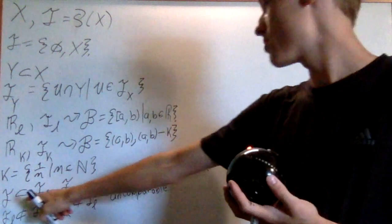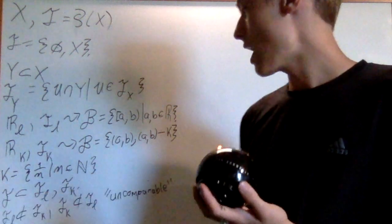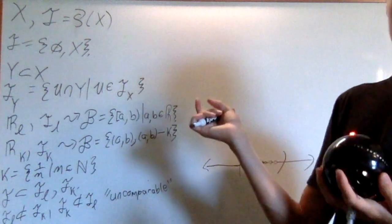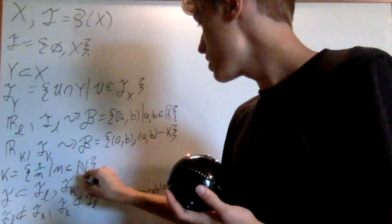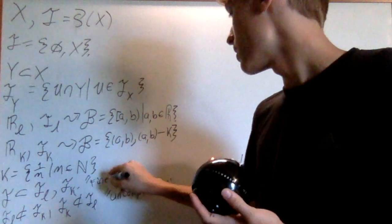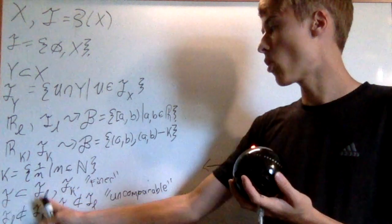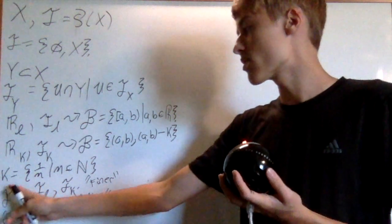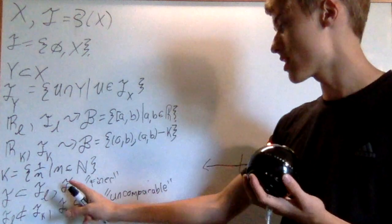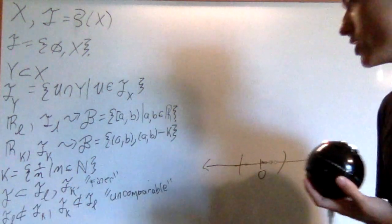Well, we call these incomparable. And we call topologies where they are larger or they have more sets in them, we call these finer. So I'd say that the L topology is finer, or the lower bound topology is finer than the standard topology, and that the K topology is finer than the standard topology.